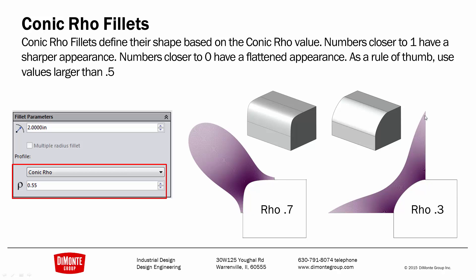With a lower Rho value, it almost smushes the fillet in. I personally don't like the look of that lower Rho value, so if I'm using the conic fillet tool I'll try for a higher Rho value. Note that this makes your fillet look visually smaller, but it can create a smoother blend because there isn't that abrupt start of radius — it is actually a little more consistent.